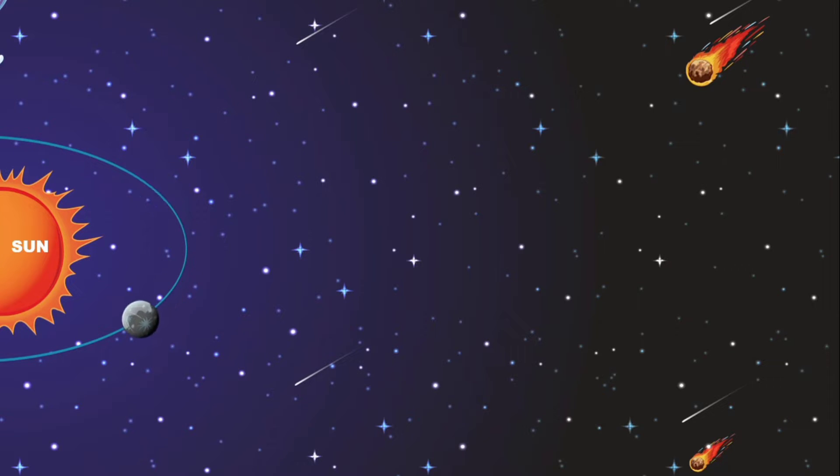Here comes Mercury, which is the smallest planet of the first four terrestrial planets. Venus, also called Earth's sister planet.